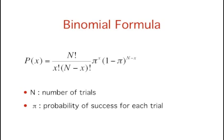The binomial distribution consists of the probabilities of each of the possible numbers of successes on n trials for independent events that each have a probability pi of occurring. For the coin flip example, n equals 2 and pi equals 0.5.